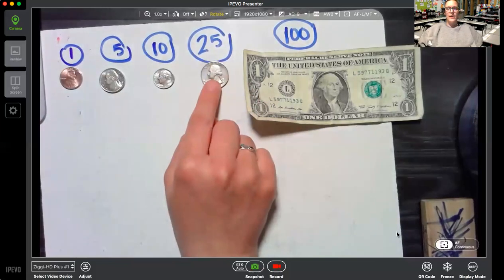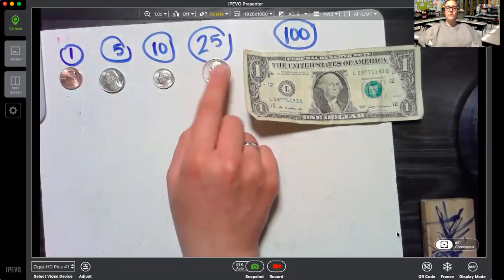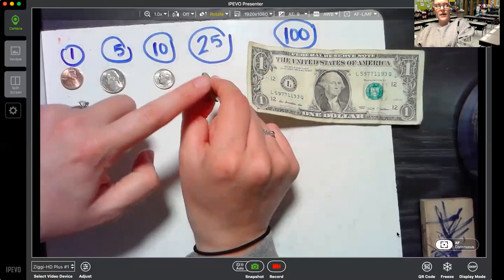And last we have quarter, quarter, big and bold. You're worth twenty-five, I'm told. The quarter also has the little ridge on the side.